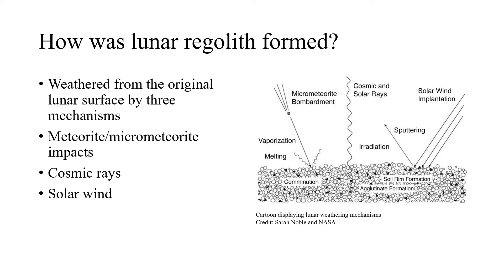The second weathering mechanism forming regolith is cosmic radiation. Cosmic rays are high-energy electrons, positrons, and other subatomic particles emitted from stars throughout the universe, traveling at near light speed and leaving behind tracks in soil grains. Said tracks may be used as a rough estimate of a regolith particle's age.